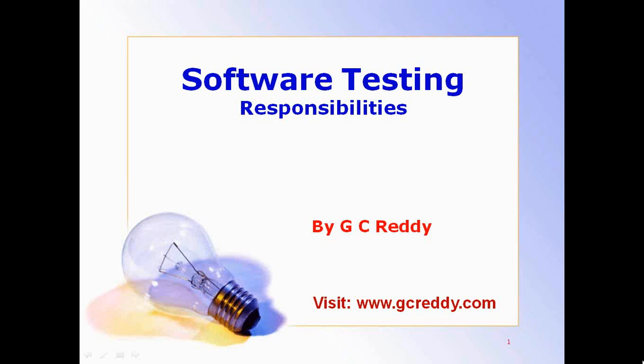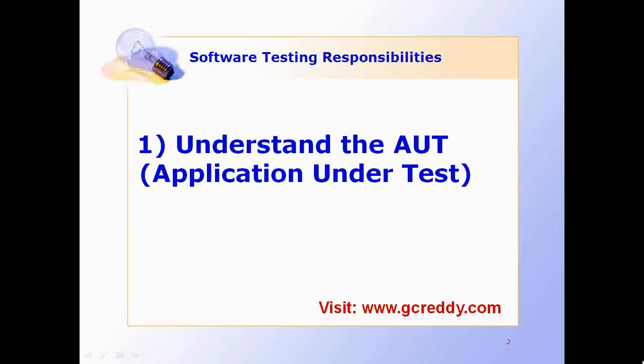Software testing important tasks and responsibilities. Number one: Understand the AUT — AUT stands for Application Under Test. First, understand the operating environment of the software application. For example, whether our application is deployed on Windows, Unix, Mac, or others.